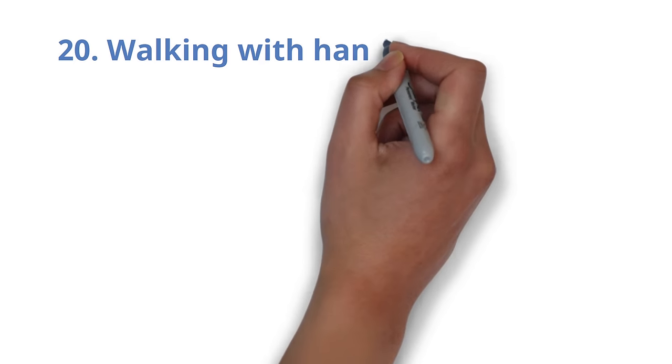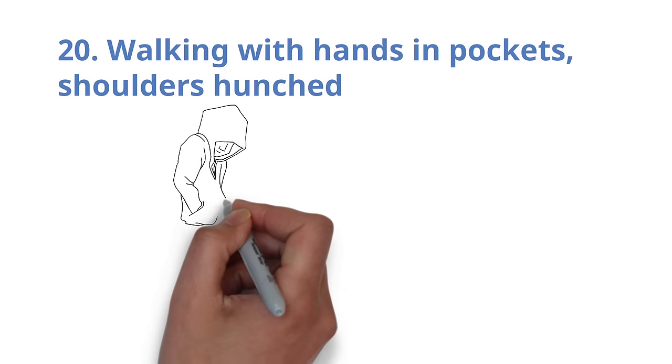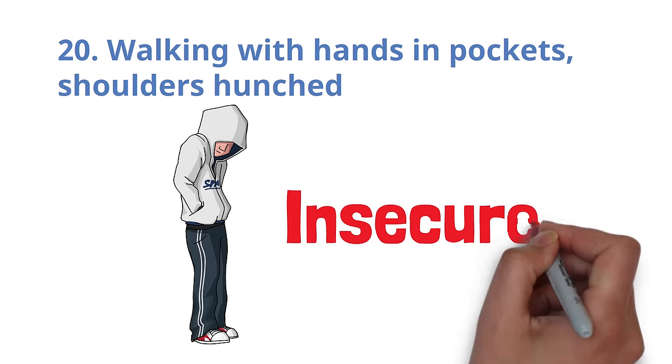Number 20. Walking with hands in pockets, shoulders hunched. This could mean you are in a depressive state or your spirits are low. You may feel insecure as well.